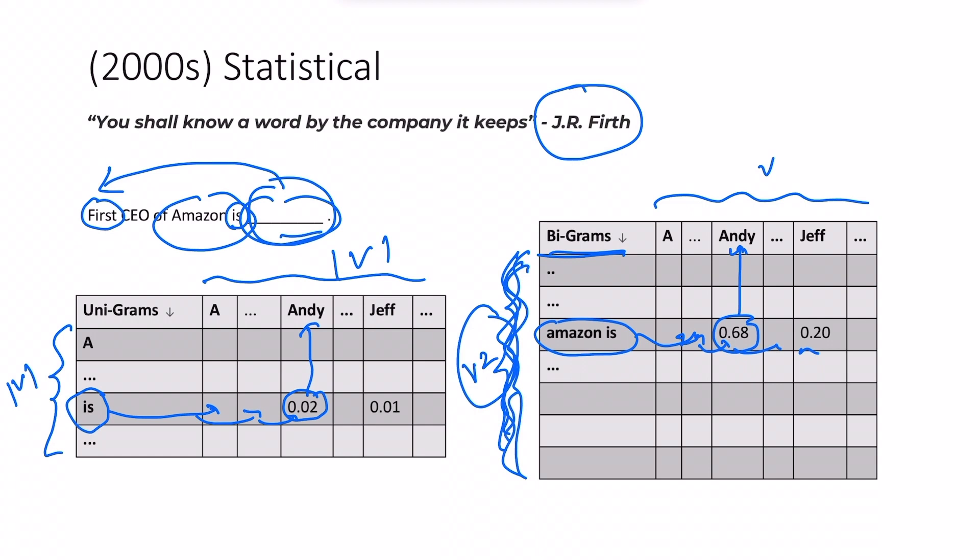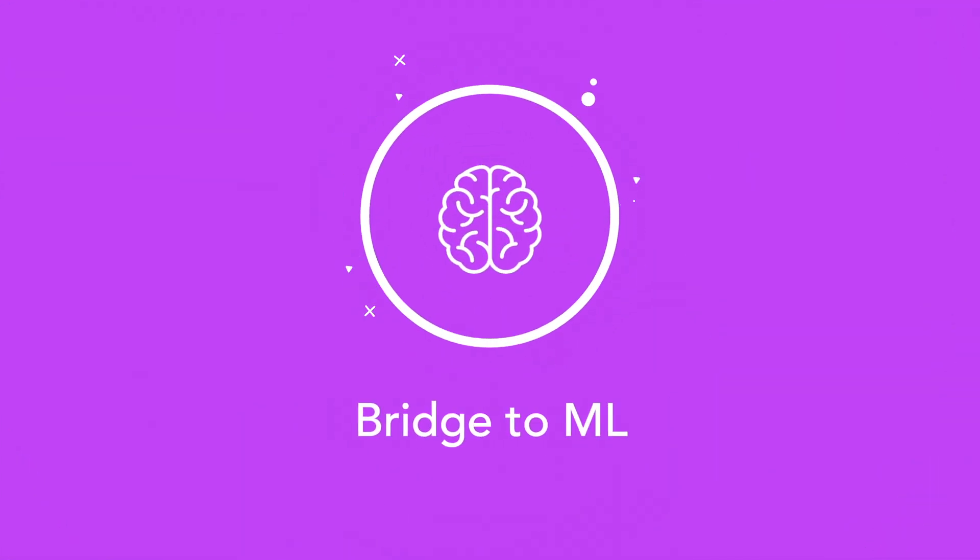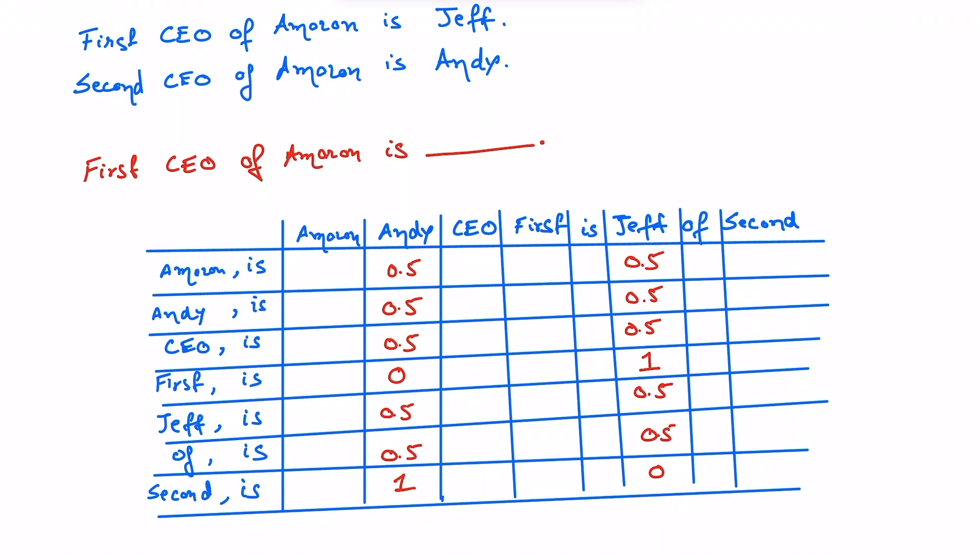But higher the n-grams more the rows in this matrix leading to higher computational complexity. Instead we can do something sly. While still making a second order model we can consider the combinations of the most recent word with each of the words that came before.